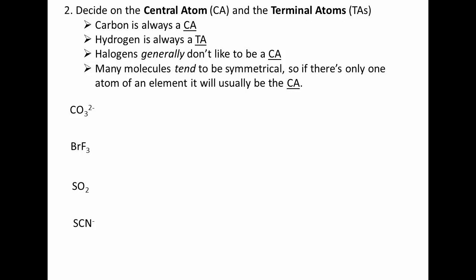First of all, carbon is always a central atom. You can think of carbon as being a very social butterfly. Hydrogen, however, likes to stay on the periphery and is always a terminal atom because, if you recall, hydrogen does not want a full octet. It is happy with two electrons, so it can only bond once. Halogens generally don't like to be central atoms, but they can be if needed. And many molecules tend to be symmetrical, so if there's only one atom of a particular element, it will be the central atom.